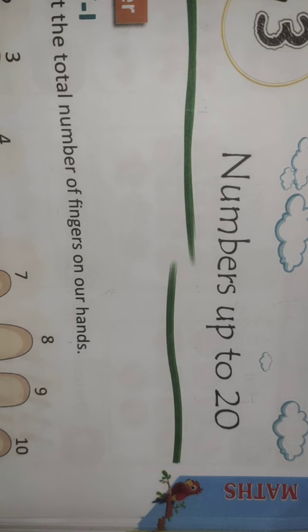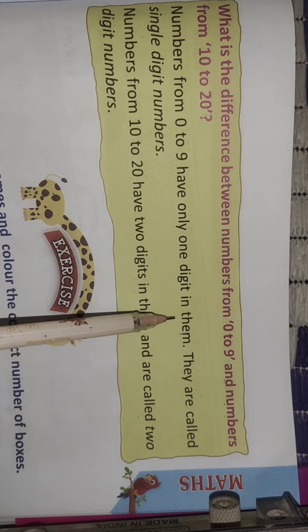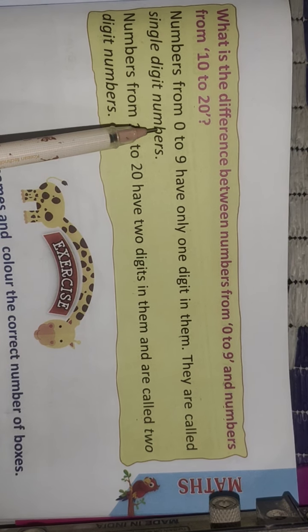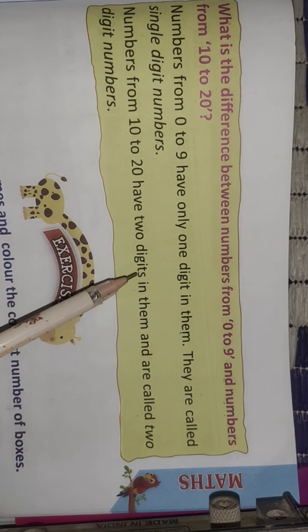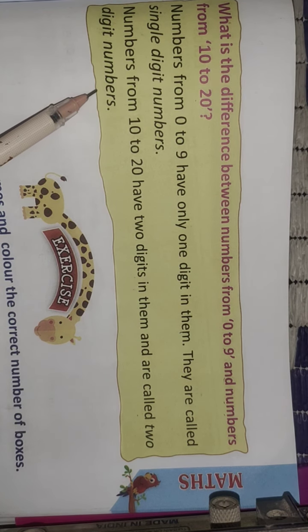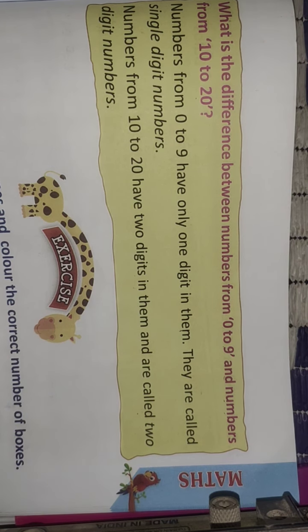How to count numbers greater than 10 was also discussed in the previous class. Numbers from 0 to 9 have only 1 digit — they are called single digit numbers. Numbers from 10 to 20 have 2 digits — they are called 2-digit numbers.